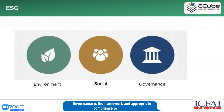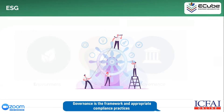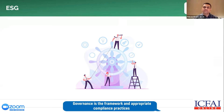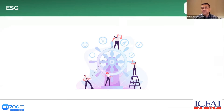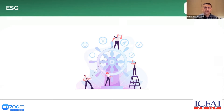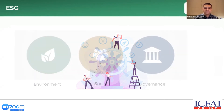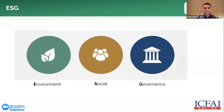And the G, the governance aspect, really deals with issues such as board effectiveness, protocols, audit controls, approach to senior executive compensation, and appropriate reliance on independent directors.